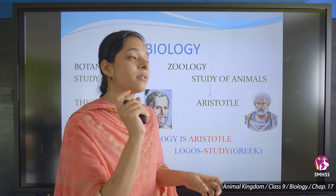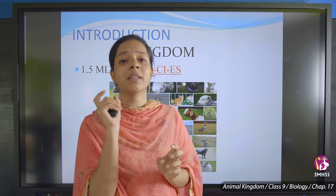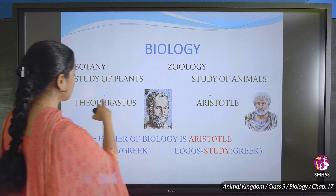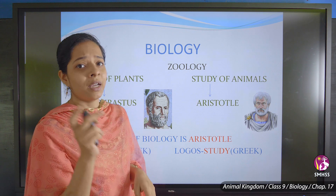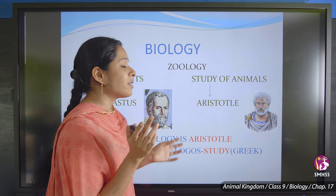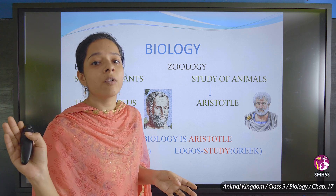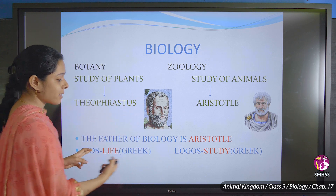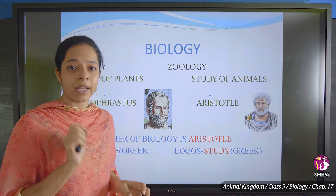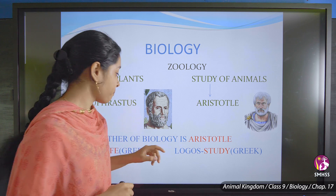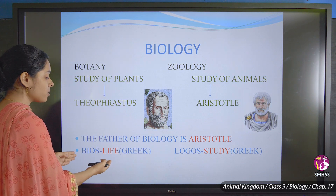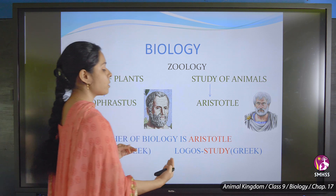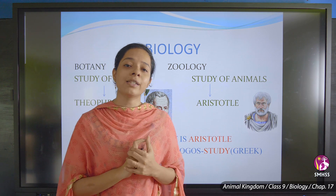What does the word bios mean? Bios is a Greek word. All those early authors were from the Greek land and wrote all those names in Greek. Biology comes from the Greek words bios, meaning life, and logos, meaning study. So studying about life is called biology.